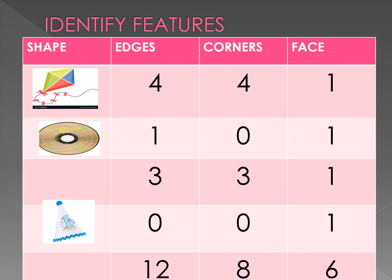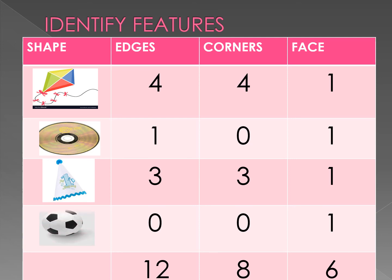A birthday cap means triangular shape. It has 3 edges, 3 corners, and 1 face. Football is a circular shape but a sphere — unlike a CD which has 1 edge, 0 corners, and 1 face, a sphere has no edges, no corners, but 1 face is shown.